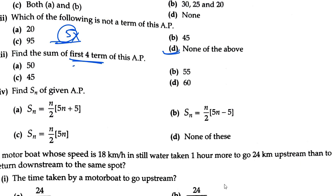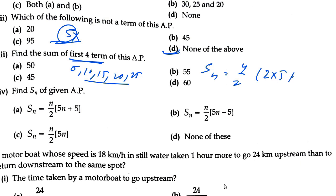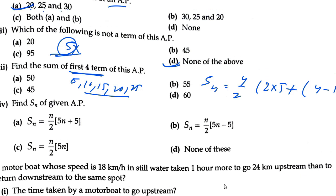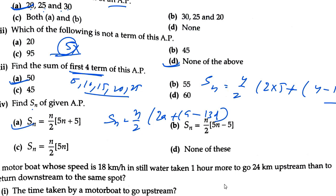Find the sum of the first 4 terms of AP: 5, 10, 15, 20, 25. Use formula S_n equals n over 2 times (2a plus (n-1)d): S_4 equals 4 over 2 times (2 into 5 plus 4 into 5). The correct answer is A. For S_n of the given AP, use S_n equals n over 2 times (2a plus (n-13)d) — follow the formula and the correct answer is A.